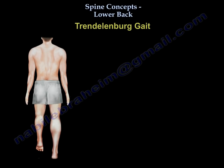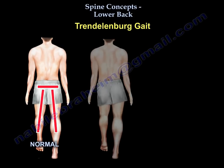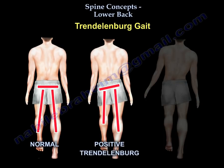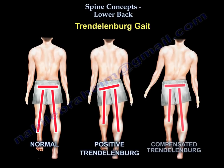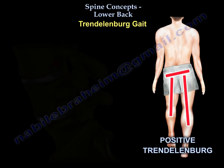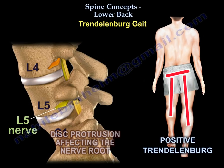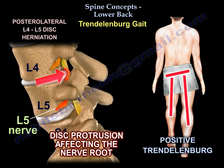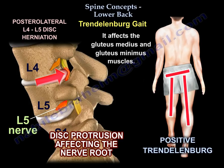Regarding Trendelenburg gait involvement because of the spine: that's when you start getting L5 nerve root, like a posterolateral disc between L4 and L5 — you will get L5 nerve root involvement.